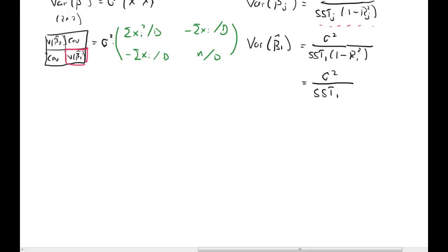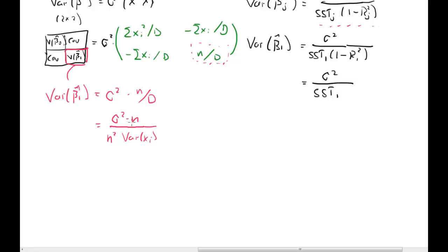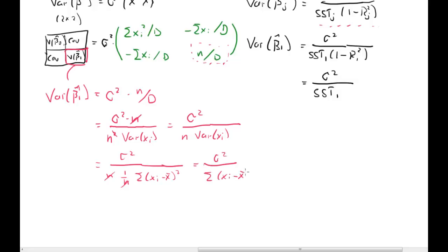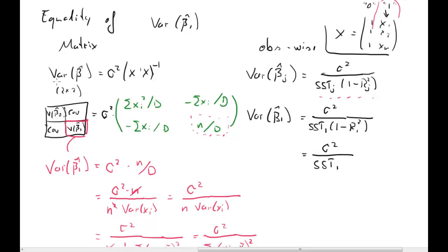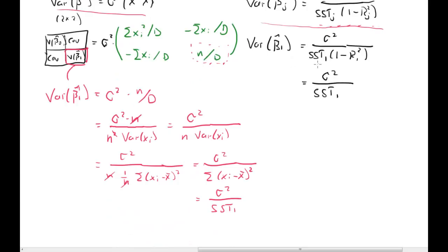Going back to the matrix form, we need (X'X) inverse, pre-multiplied by sigma-squared. We're interested in the second diagonal element: sigma-squared times n over d. Since d equals n-squared times the variance of x_i, one n cancels, giving sigma-squared times 1 over (n times variance of x_i). The variance of x_i is (1/n) times the sum of (x_i minus x-bar) squared, so we're left with sigma-squared over the sum of squared deviations — which is exactly SST. Therefore the variance from the matrix form for beta-1-hat is identical to the observation-wise form.